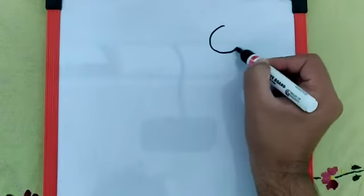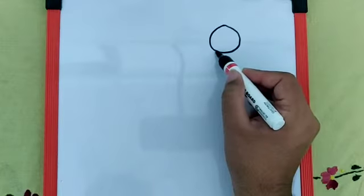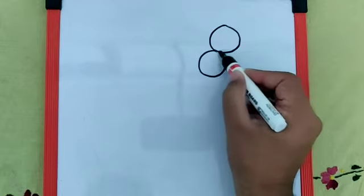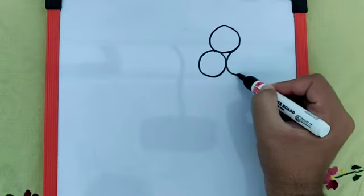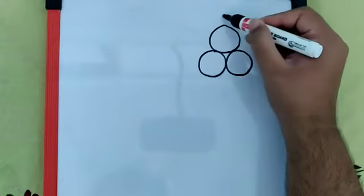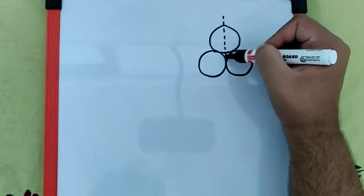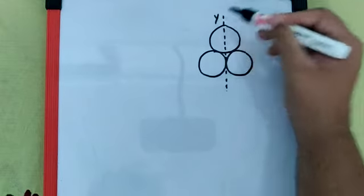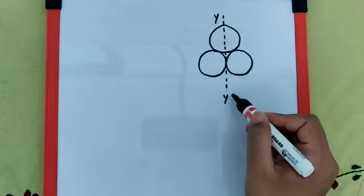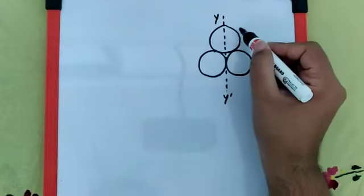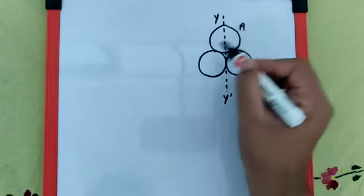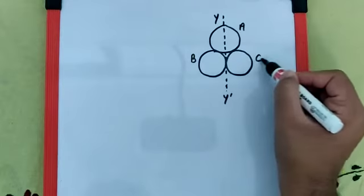Now the diagram given in the question is something like this. And the axis yy dash is something like this. Let's call this disk as A, this as B and this as C.